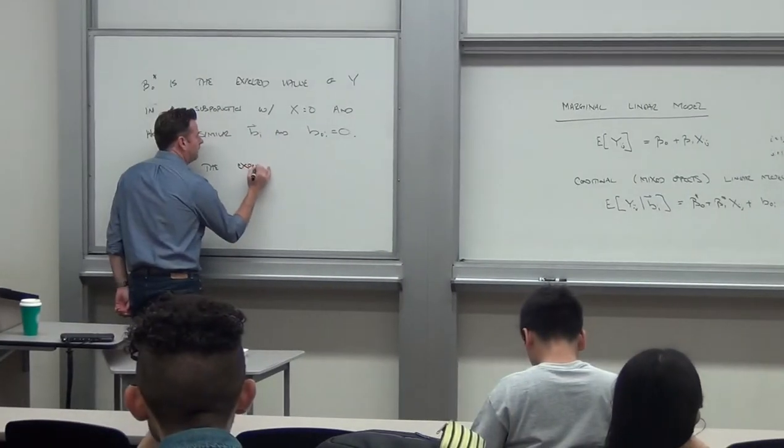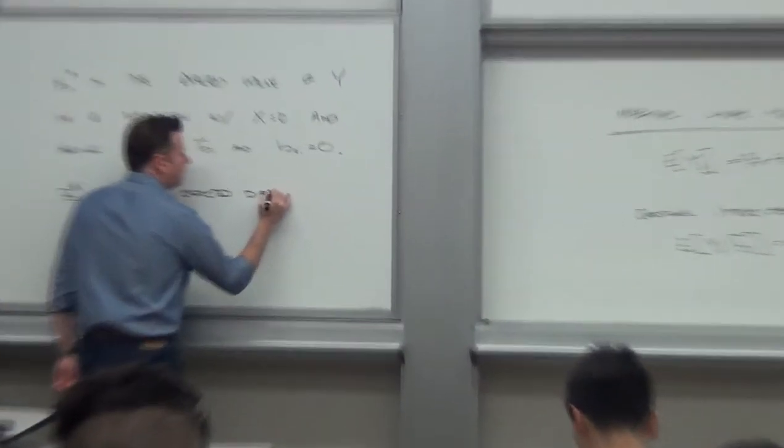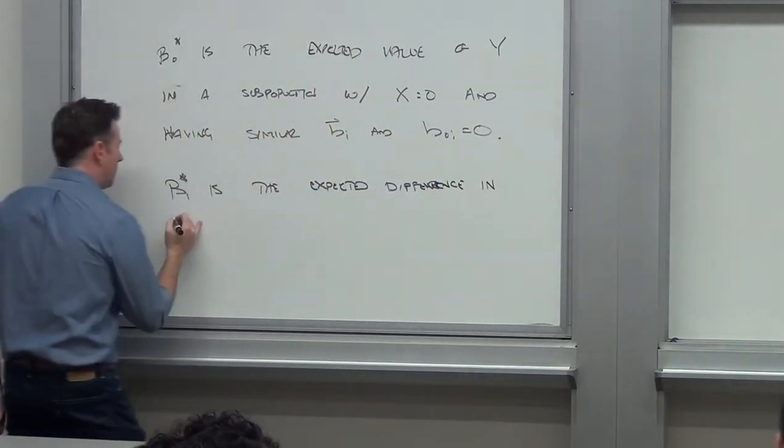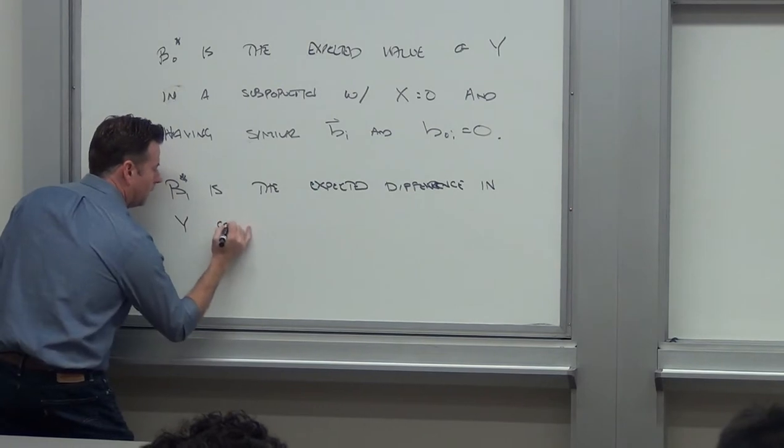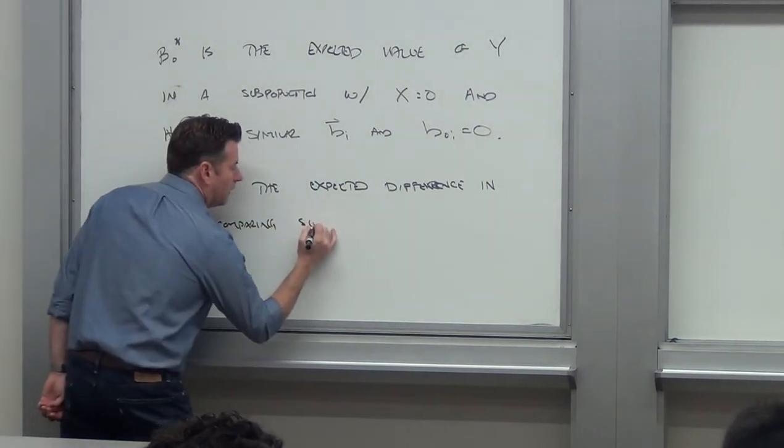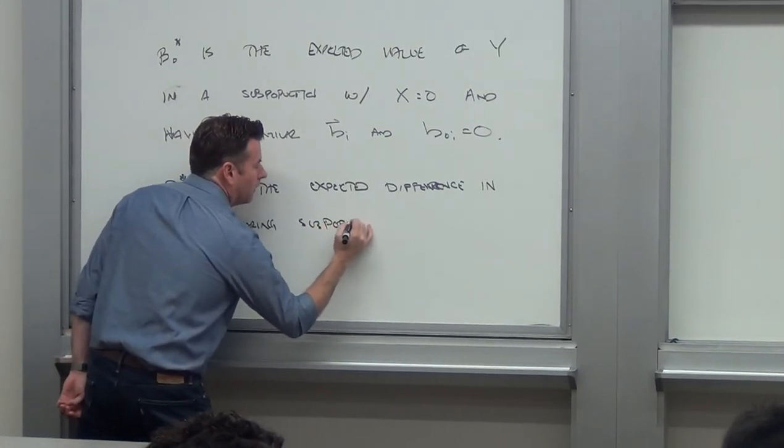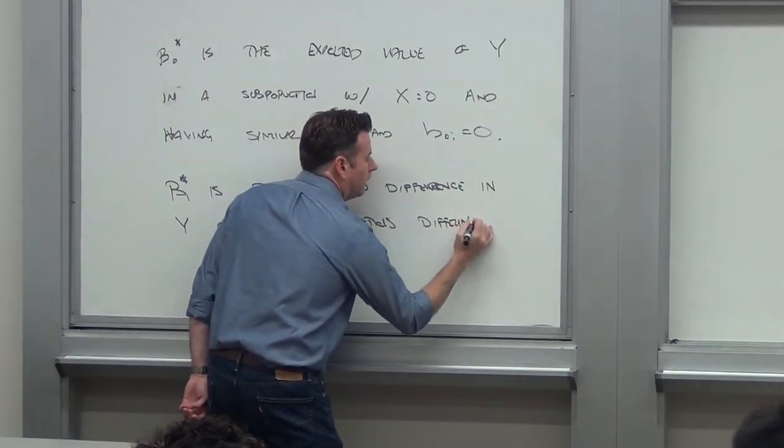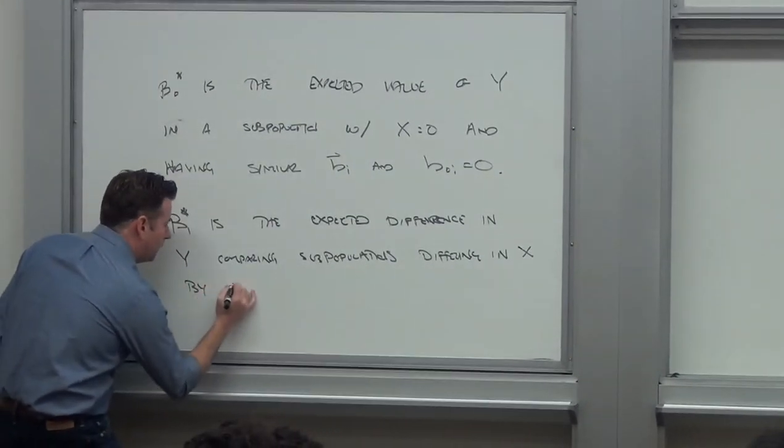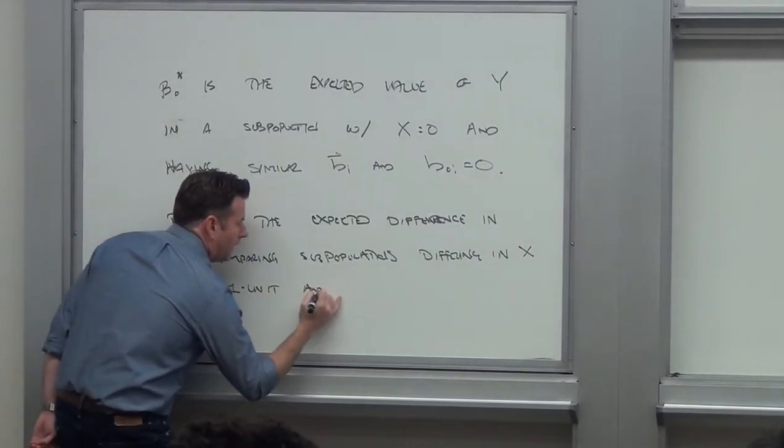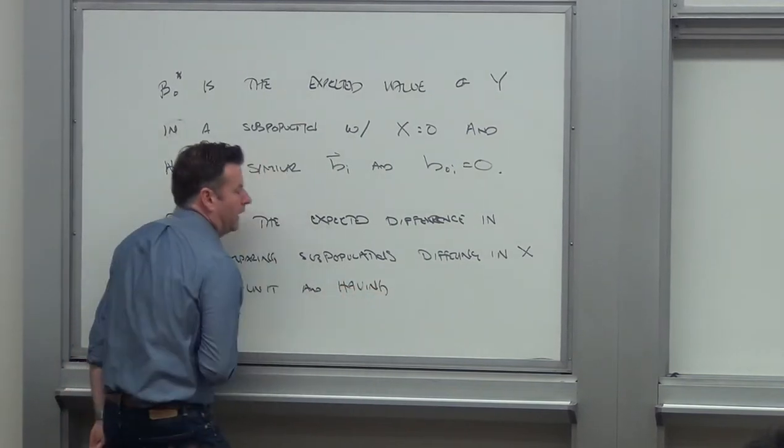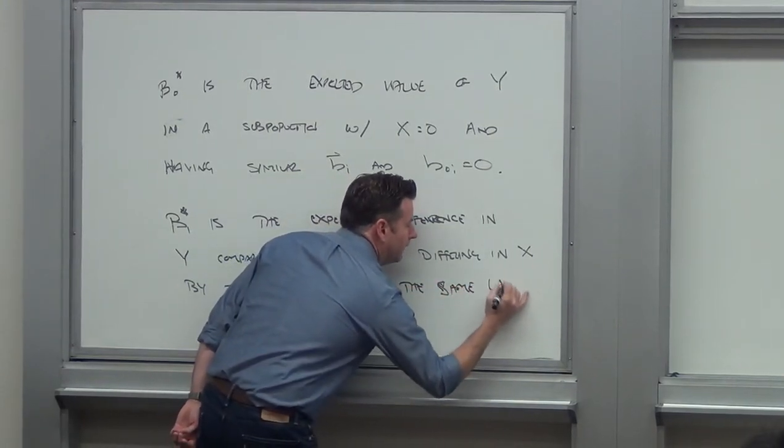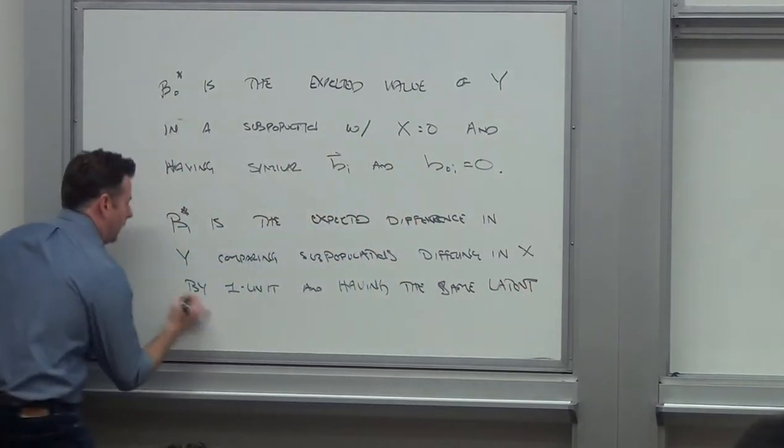So it's the expected difference in y, comparing subpopulations differing in x by one unit and having, I'm going to actually add another word on this, having the same latent random effect.